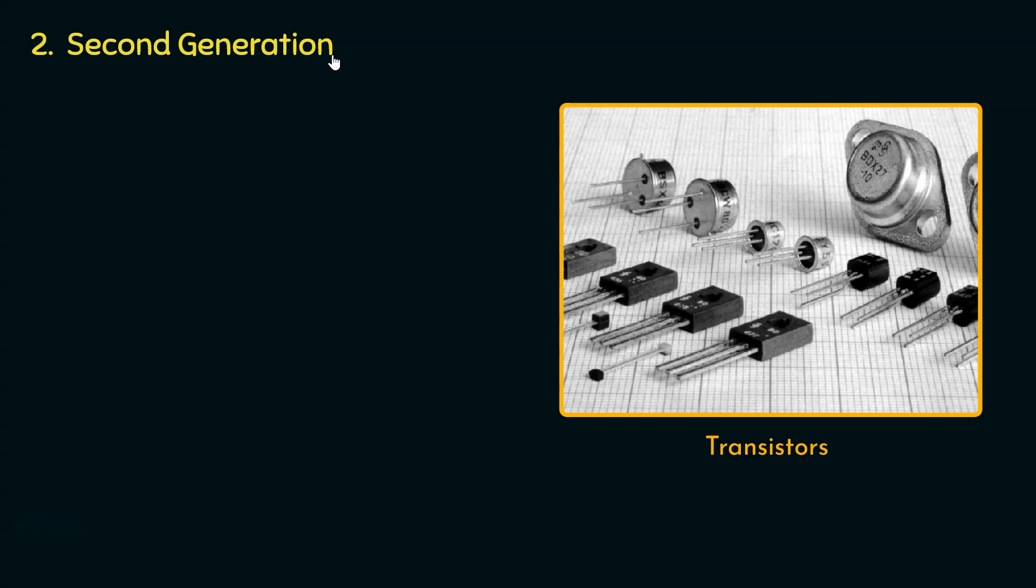During the second generation of computers, the advent of transistors replaced the previously used vacuum tubes. What were the reasons for this replacement?